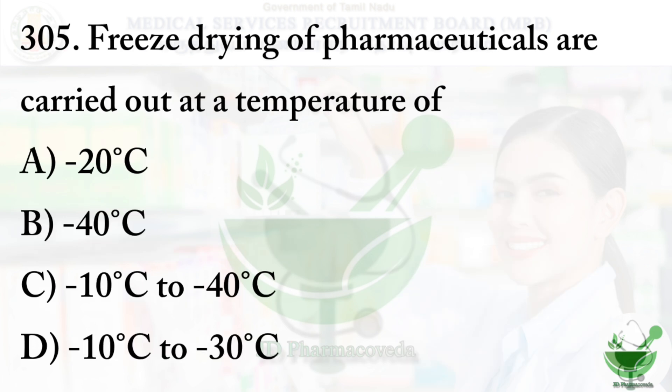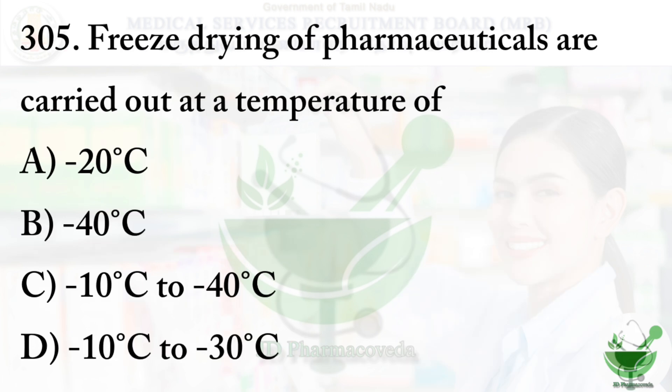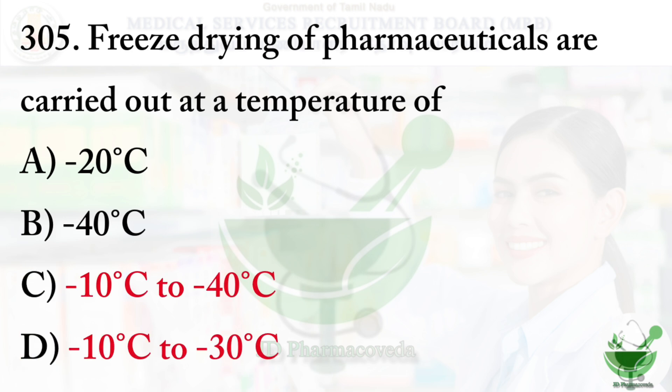Question number 305: Freeze drying of pharmaceuticals is carried out at a temperature of? Option A: minus 20°C, Option B: minus 40°C, Option C: minus 10 to minus 40°C, Option D: minus 10 to minus 30°C. The correct answer is Option C and Option D.